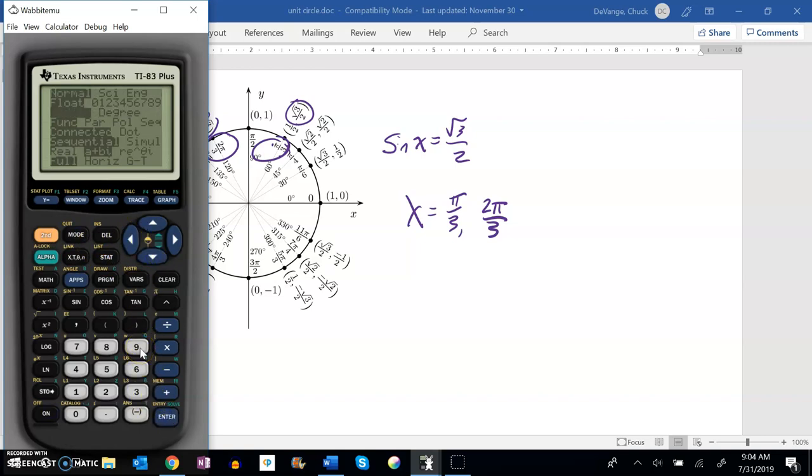And remember my original equation was four times sine of some value. I'll just plug in pi over three minus two times the square root of three. And that should equal zero. And it does. So that's a good sign that that works.